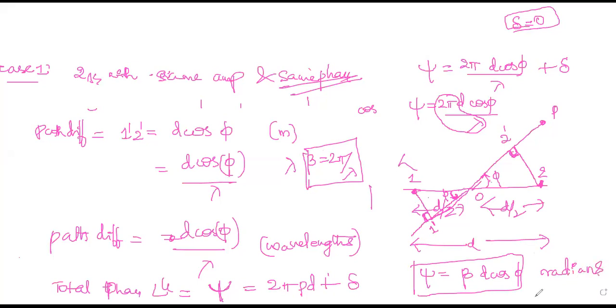So for this particular case—two isotropic sources with same amplitude and same phase—the maximum direction is at 90 degrees or 270 degrees. This means the major lobe will be coming in the 90 degree and 270 degree direction. The next steps are to find the minimum direction and the half power points.